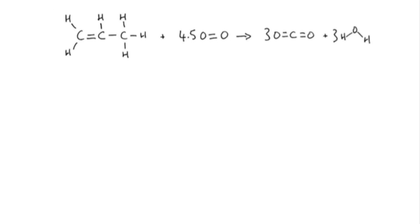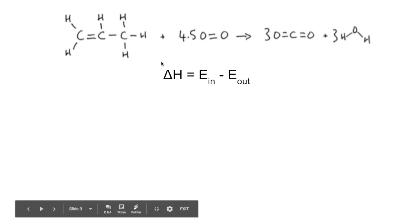The first thing I would recommend you do is actually write out the equation in displayed formula. The great thing about displayed formula is you can see all of the bonds. If you remember my method I call it the in minus out method. The enthalpy change for the reaction is equal to the energy that has to go in to break the bonds in the reactant. And from that you subtract the energy that's released when the bonds in the product are formed.